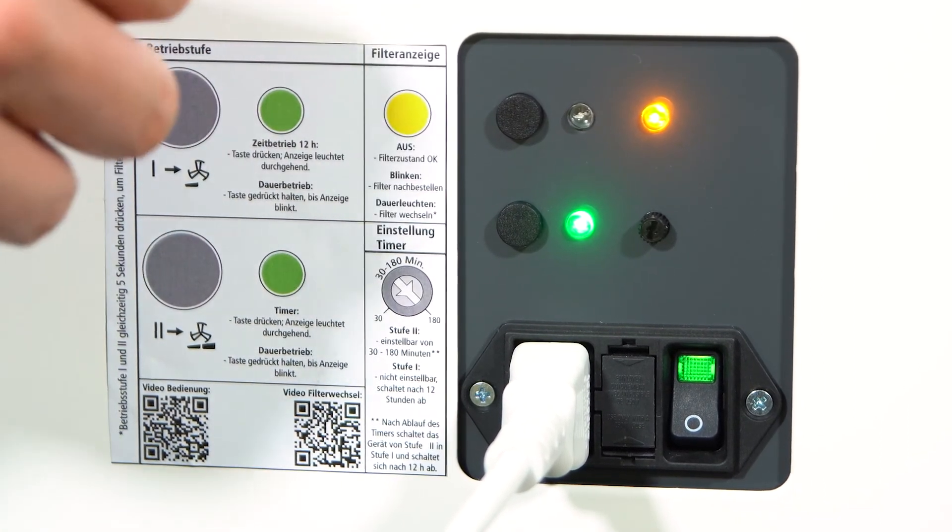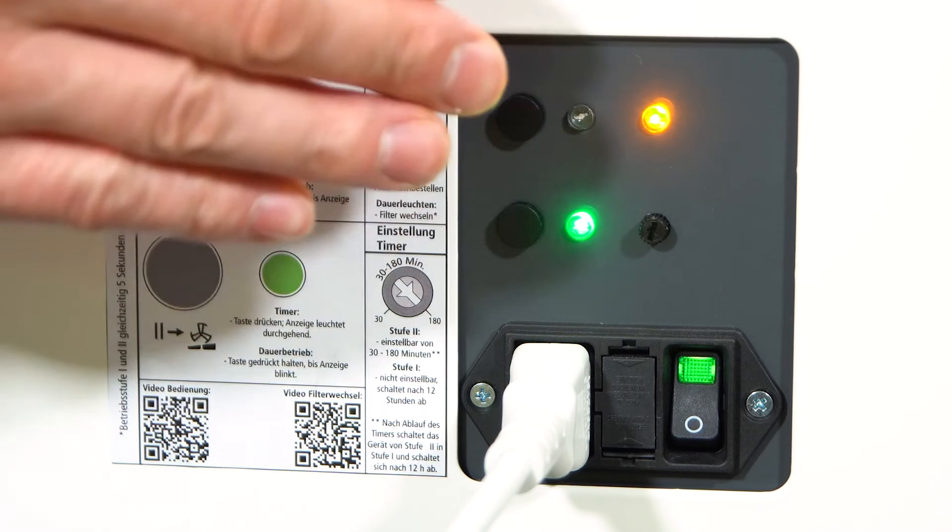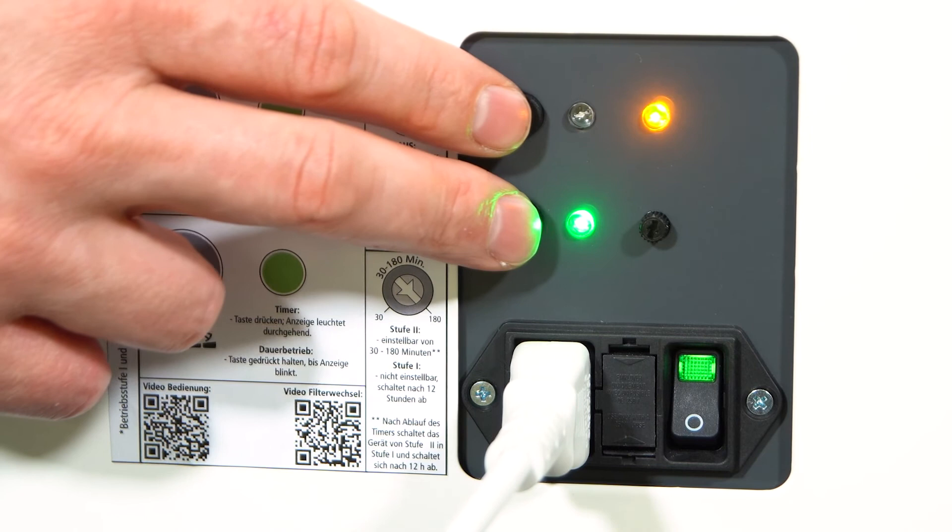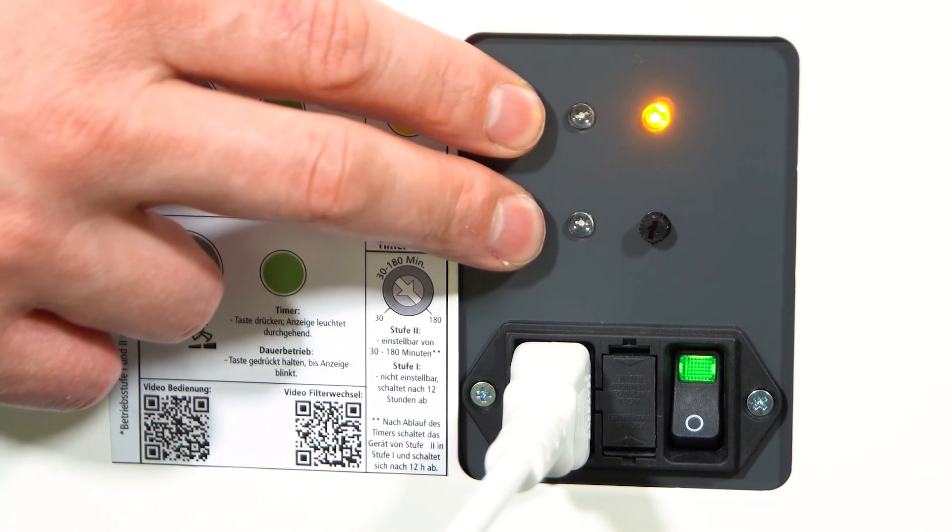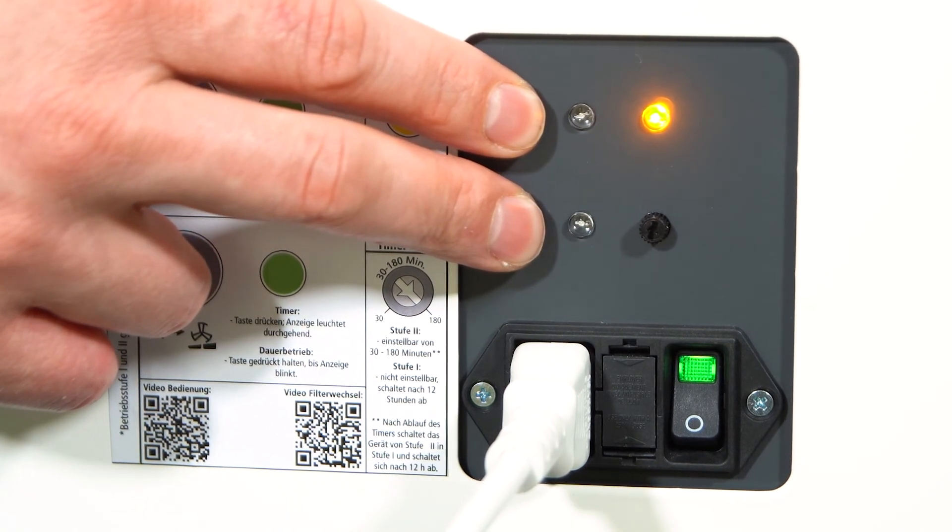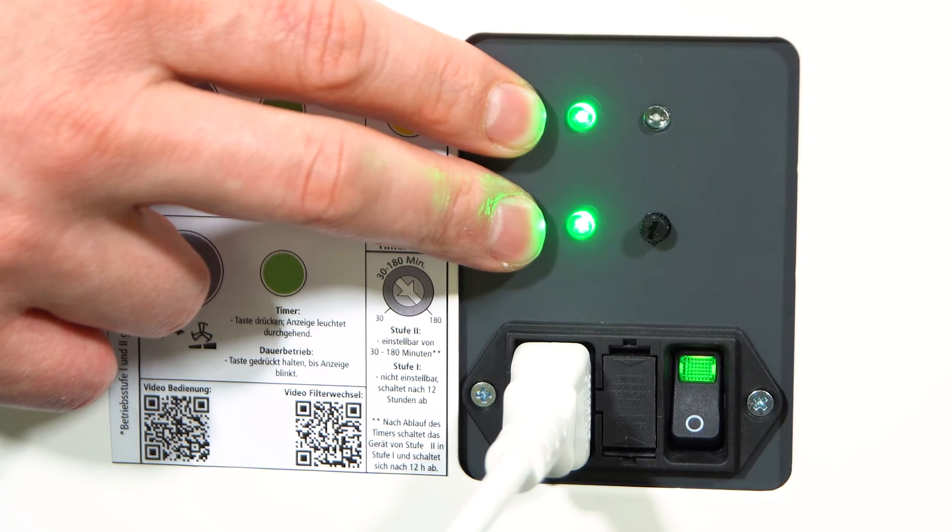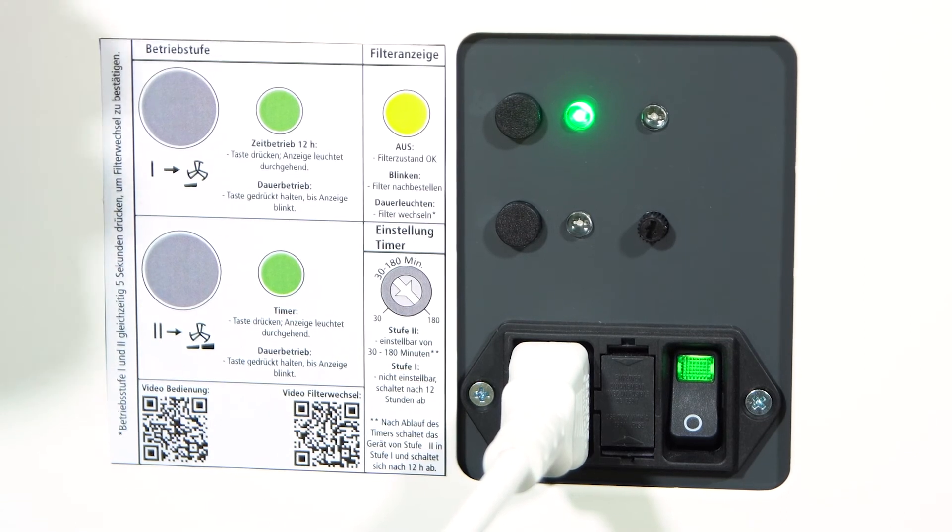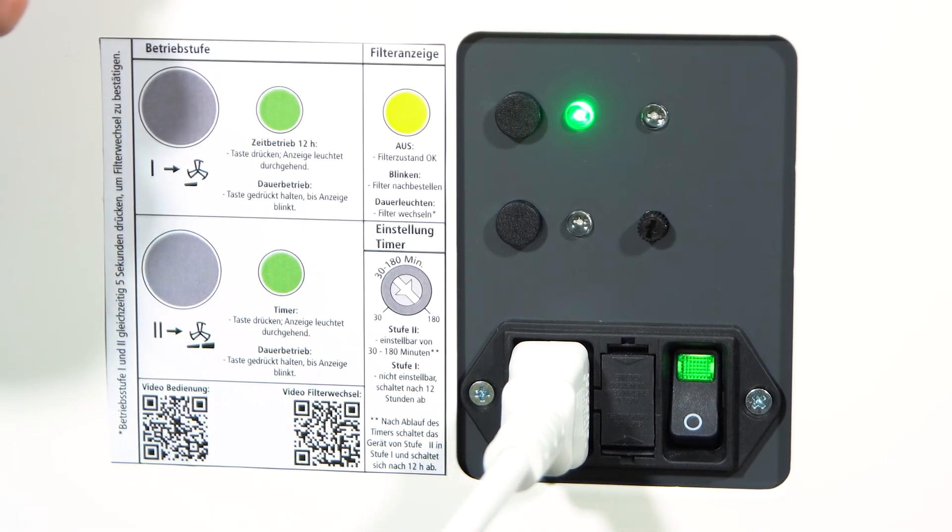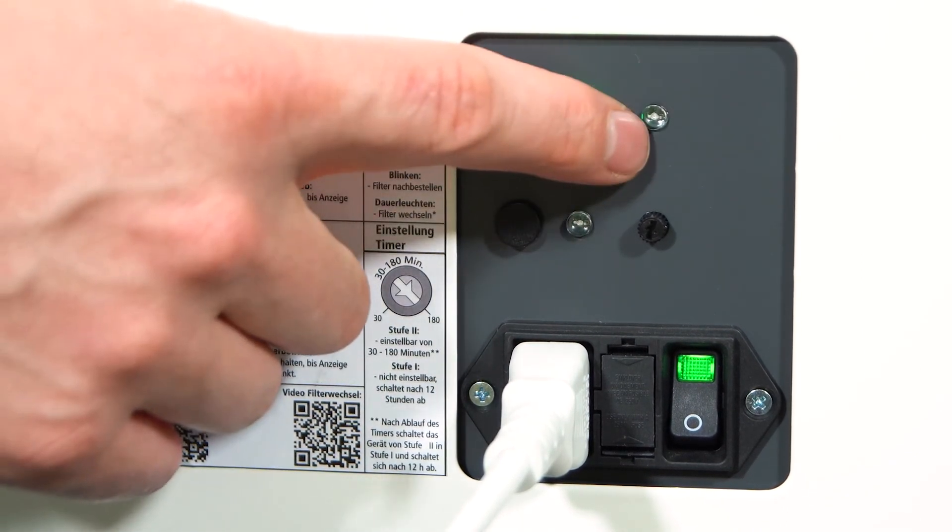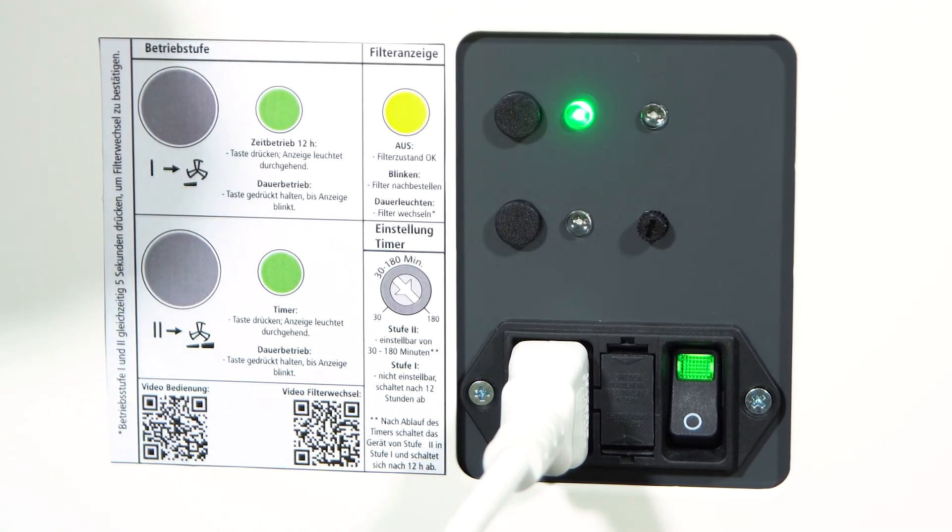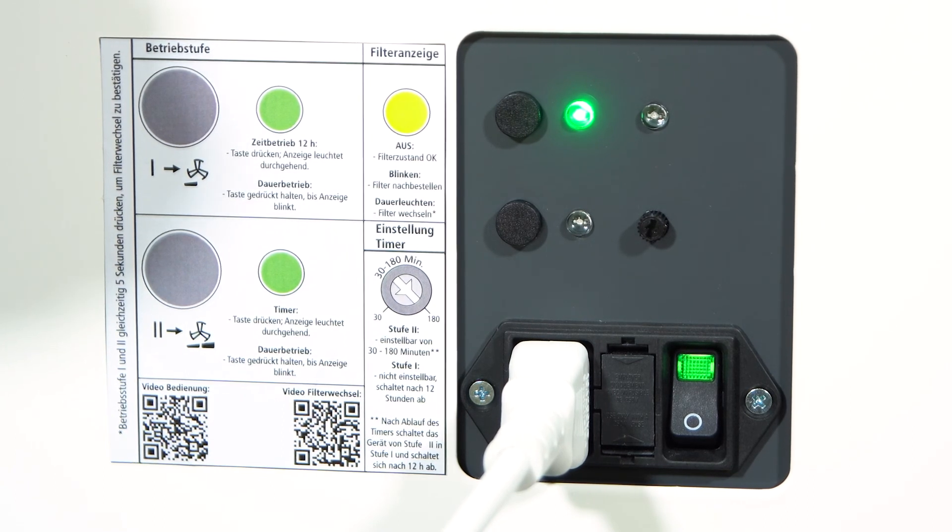After changing the filter, a reset is required. To do this, press buttons 1 and 2 simultaneously and hold them down until the LEDs briefly flash green. The short green flashing means that the filter change has been carried out and the reset has been completed. The yellow LED subsequently goes off and normal operation can continue.